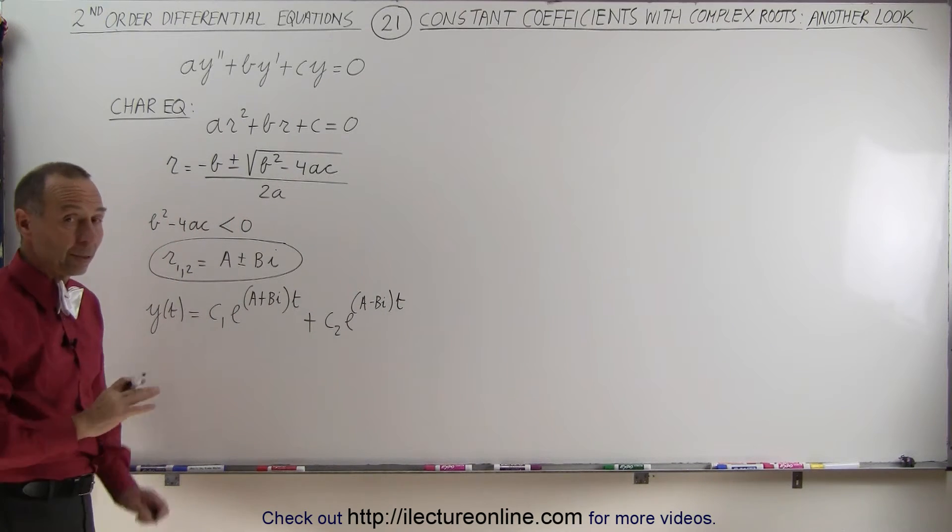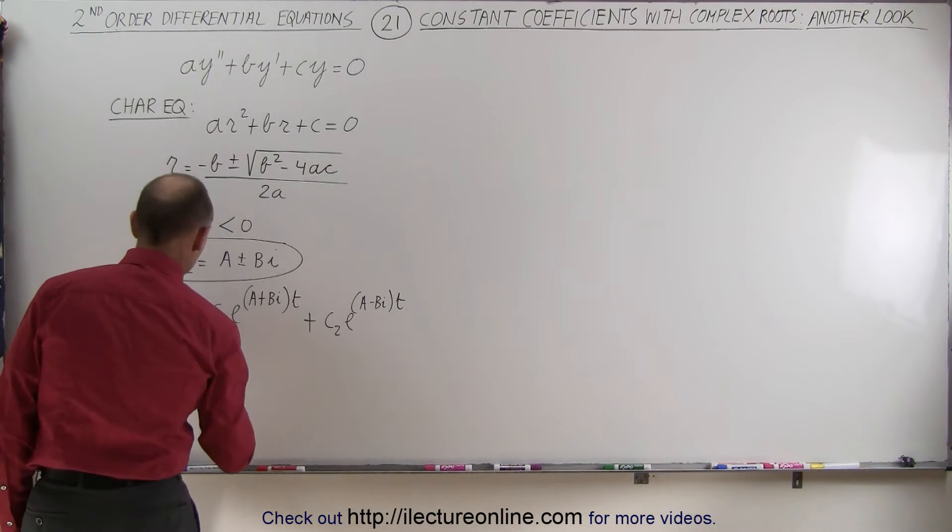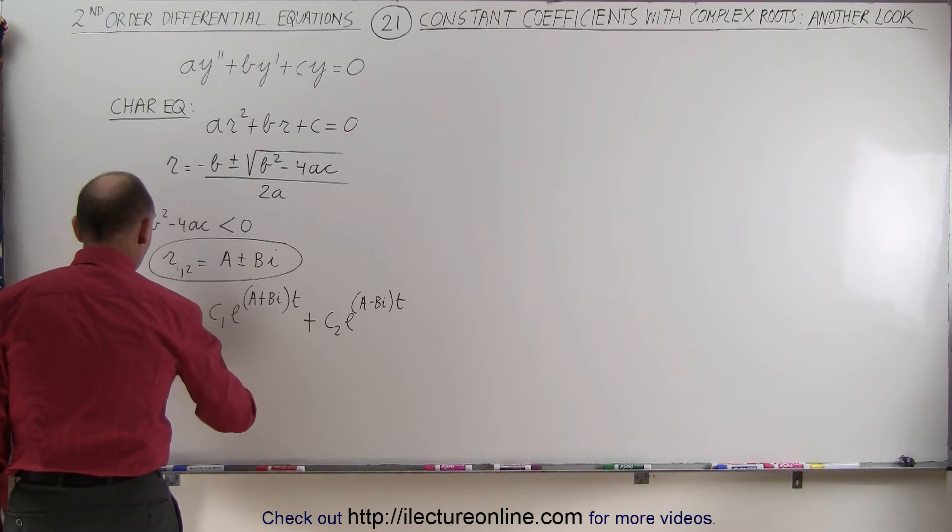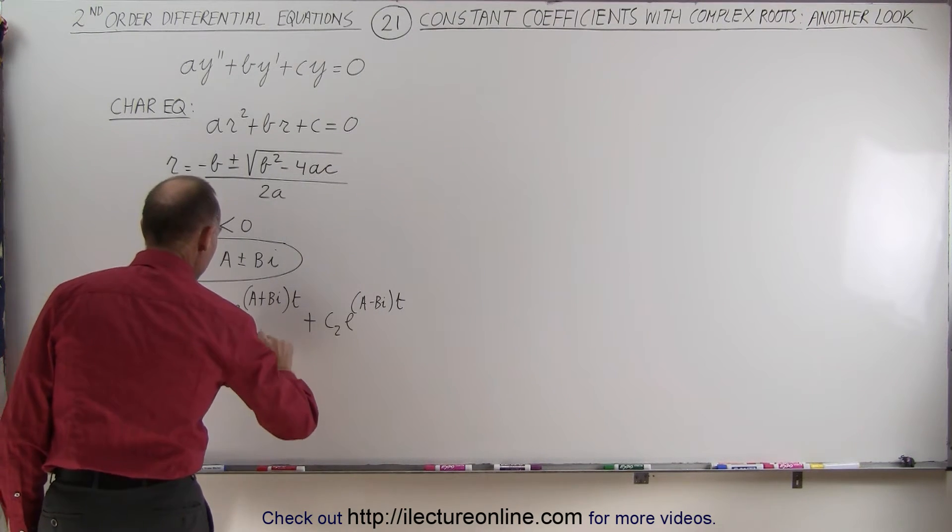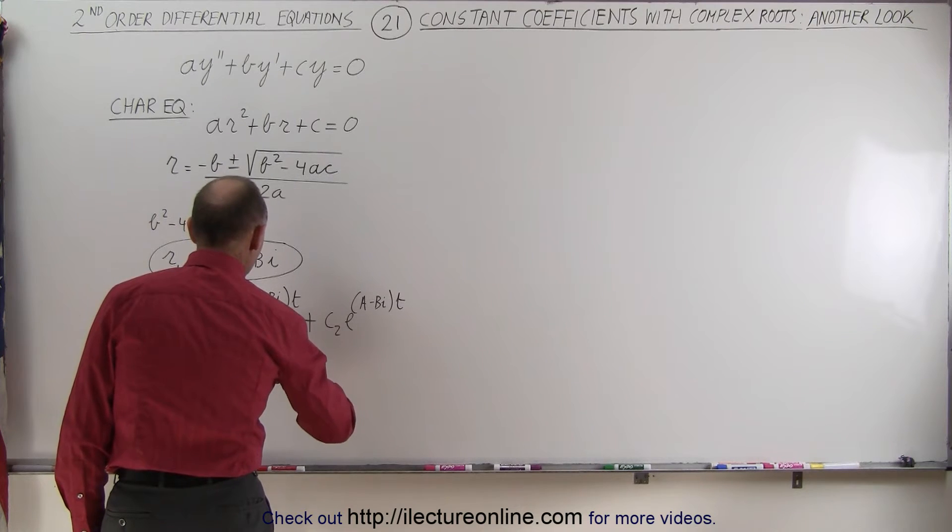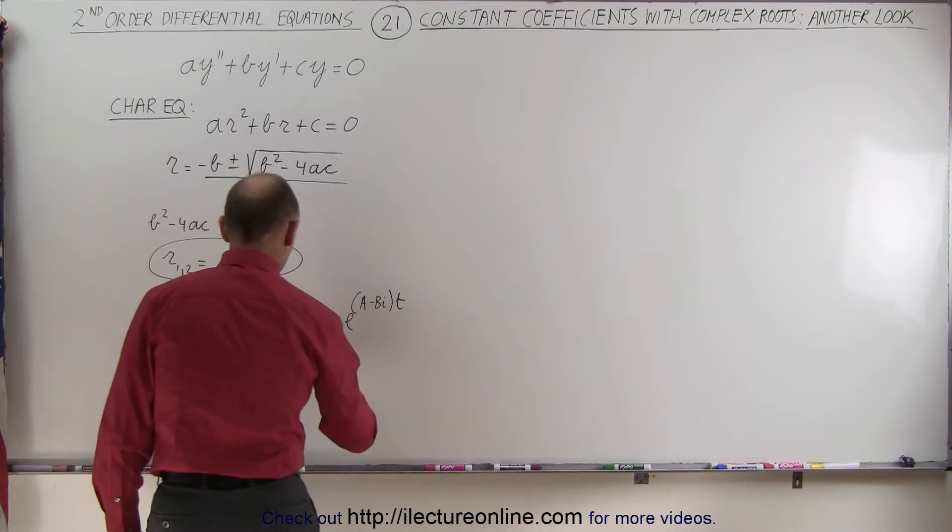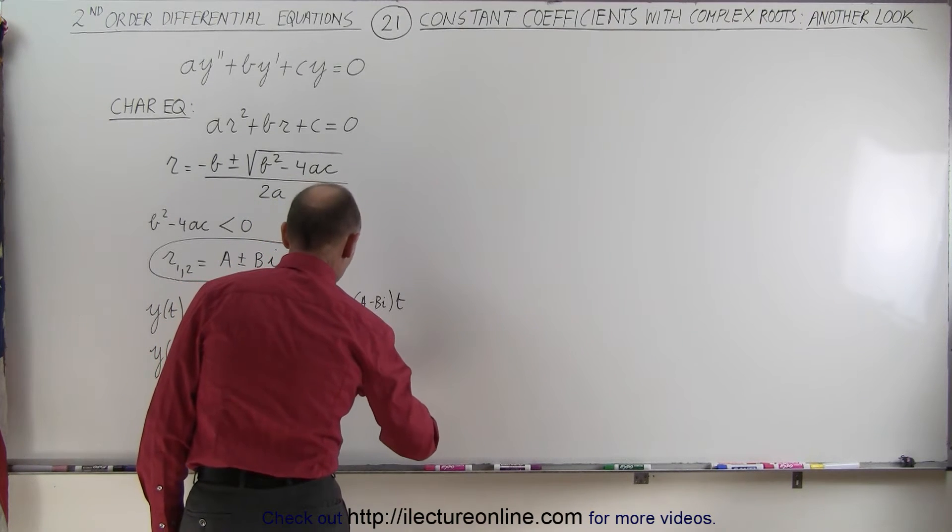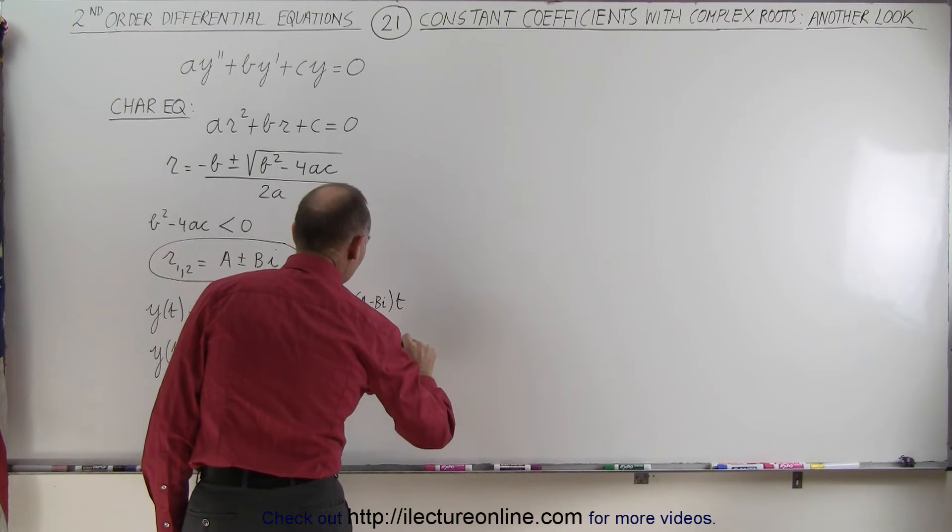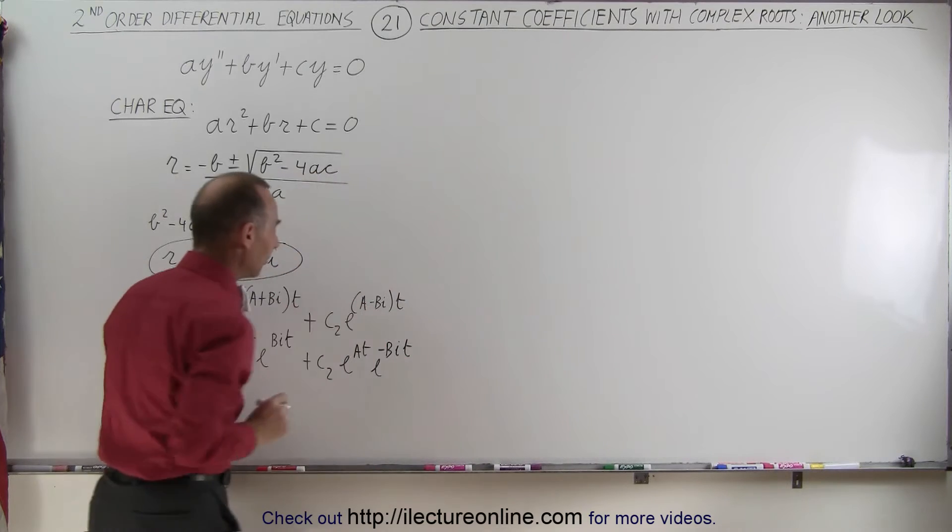Of course, we can then rewrite that a little bit more. We can separate those two, and this would become y as a function of time is equal to c1e to the at times e to the bi t, and here we get plus c2e to the at times e to the minus bi t.